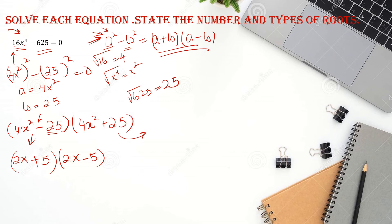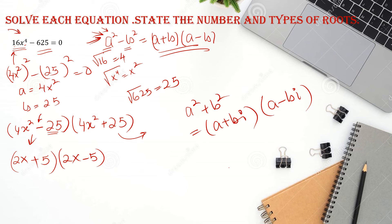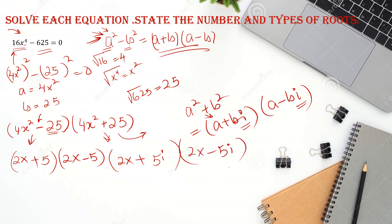The second factor (4x² + 25) is in the form a² + b², which equals (a + bi)(a - bi). Whenever there is a plus sign, don't forget to write i after the second term. So the square root of 4x² is 2x, giving factors (2x + 5i) and (2x - 5i).